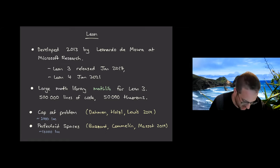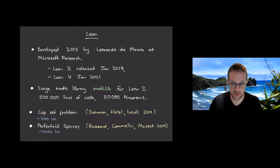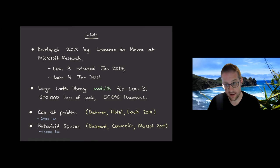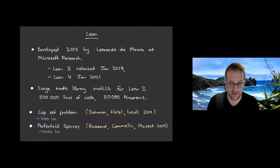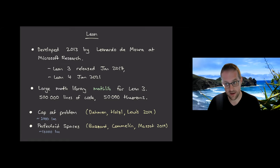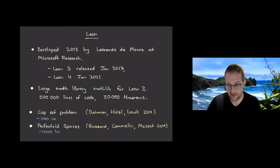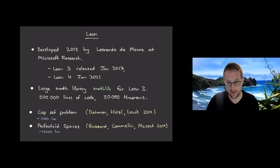My favorite result that's been formalized is the cap set problem — a beautiful theorem proved by Ellenberg and Gijswijt in 2016, which says that if you have a subset of n-dimensional affine space over the three-element field that doesn't contain an affine line, then its size is exponentially smaller than the size of the space. This was open for a long time, proved in 2016, and then formalized three years later in Lean with just about 2,000 lines of code — much of which was standard library building rather than proof-specific.